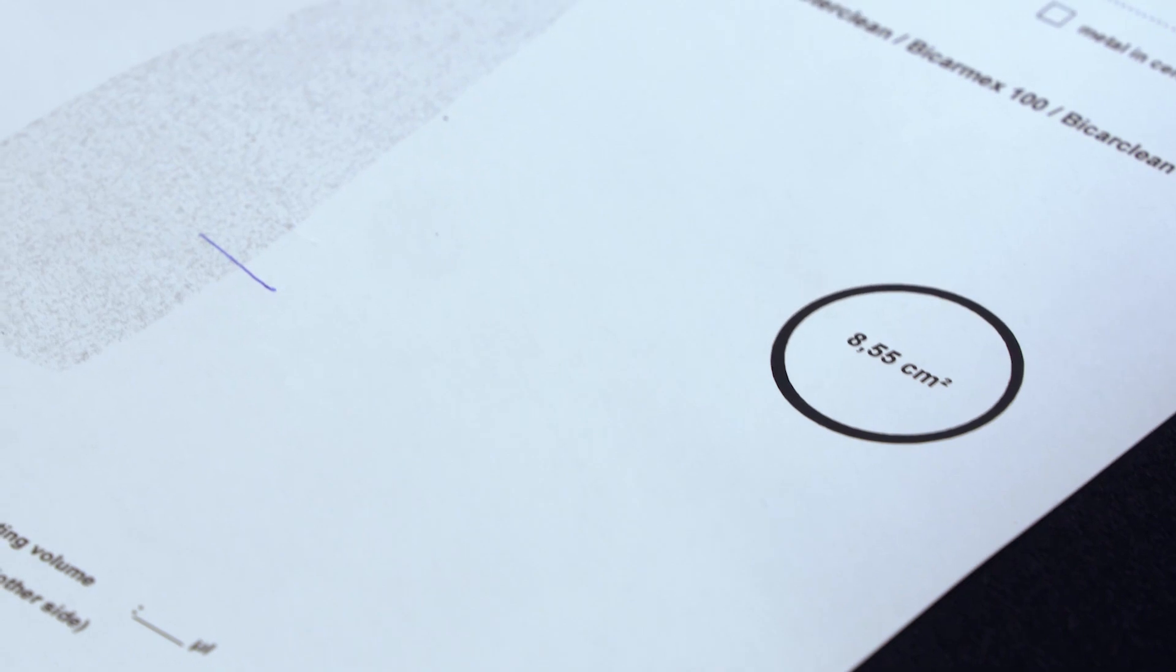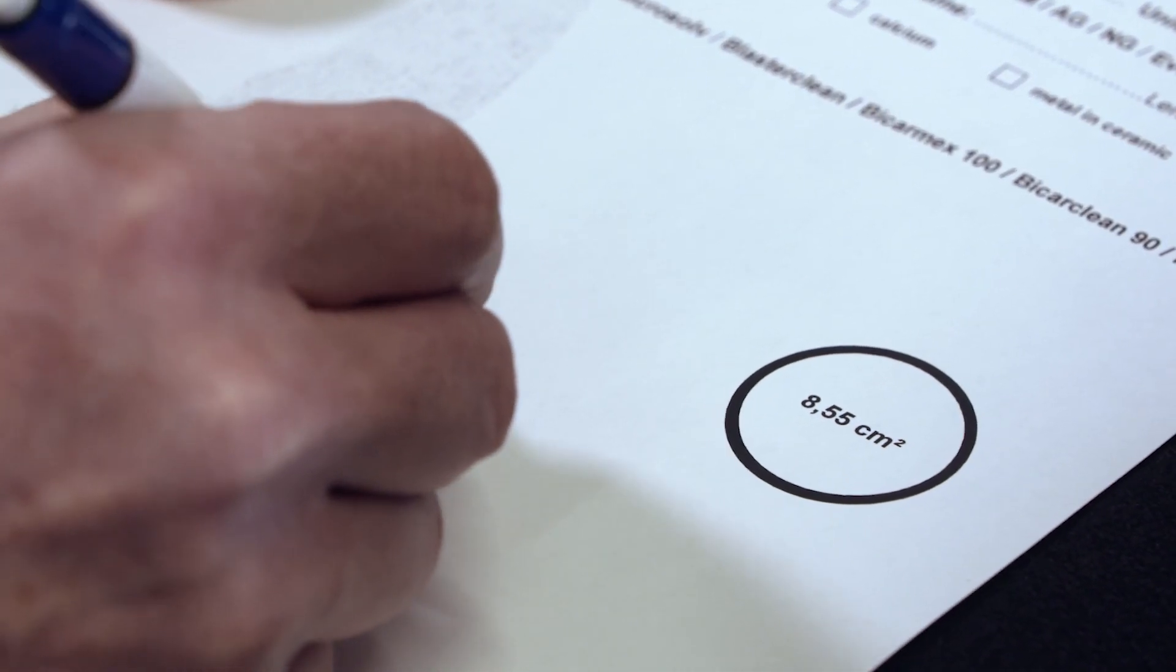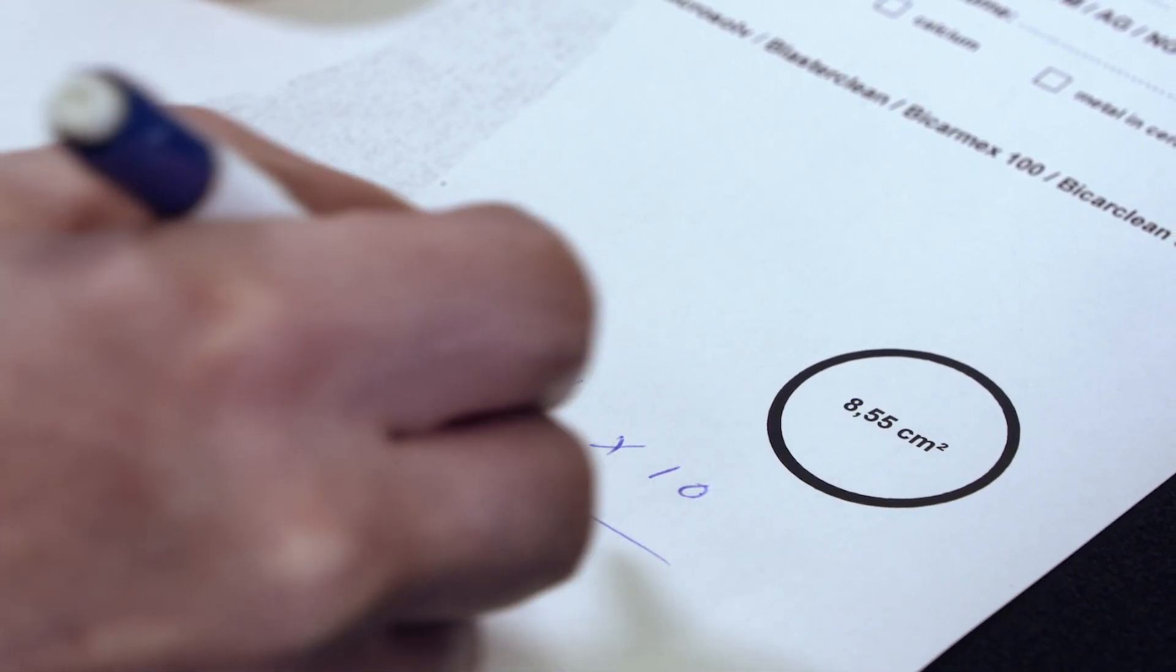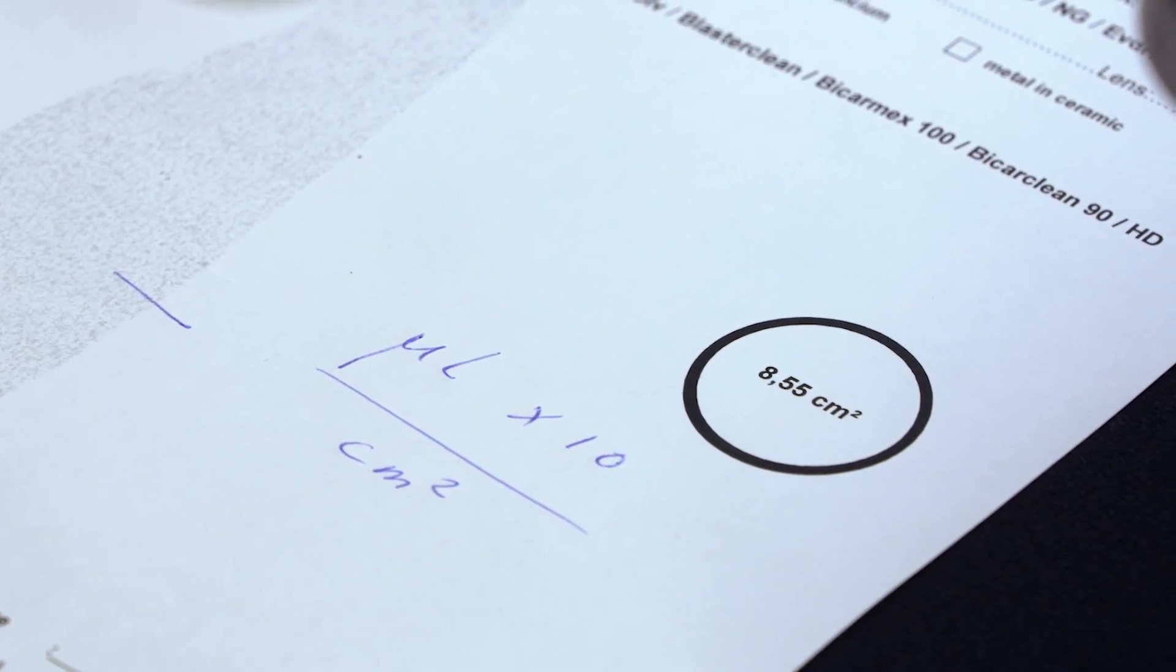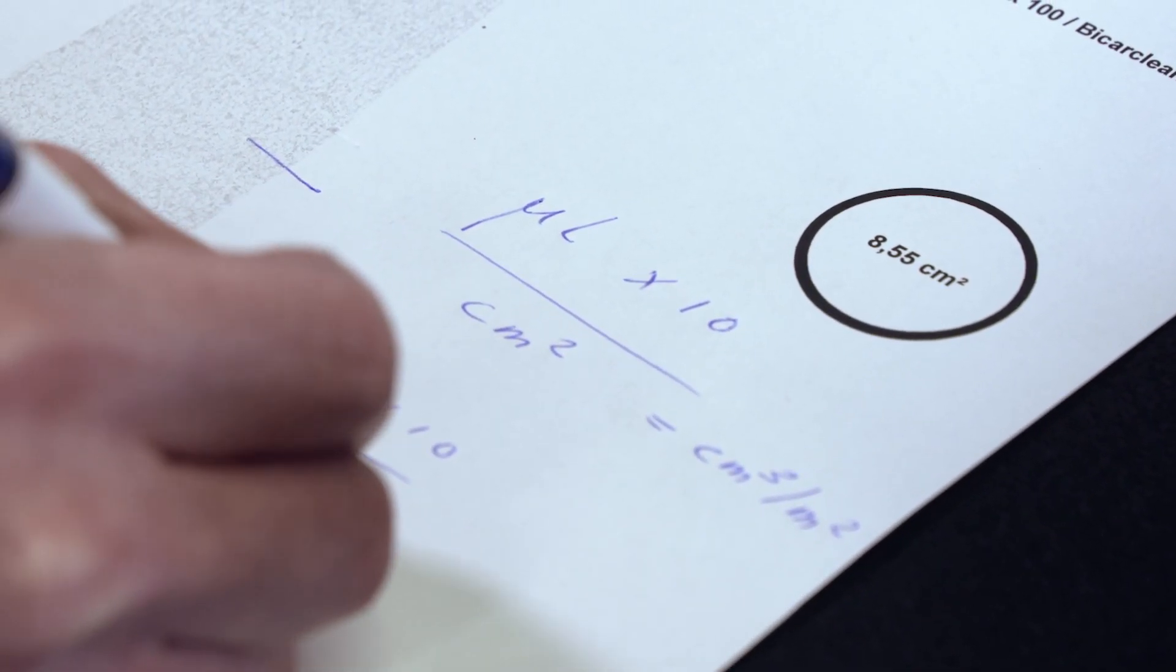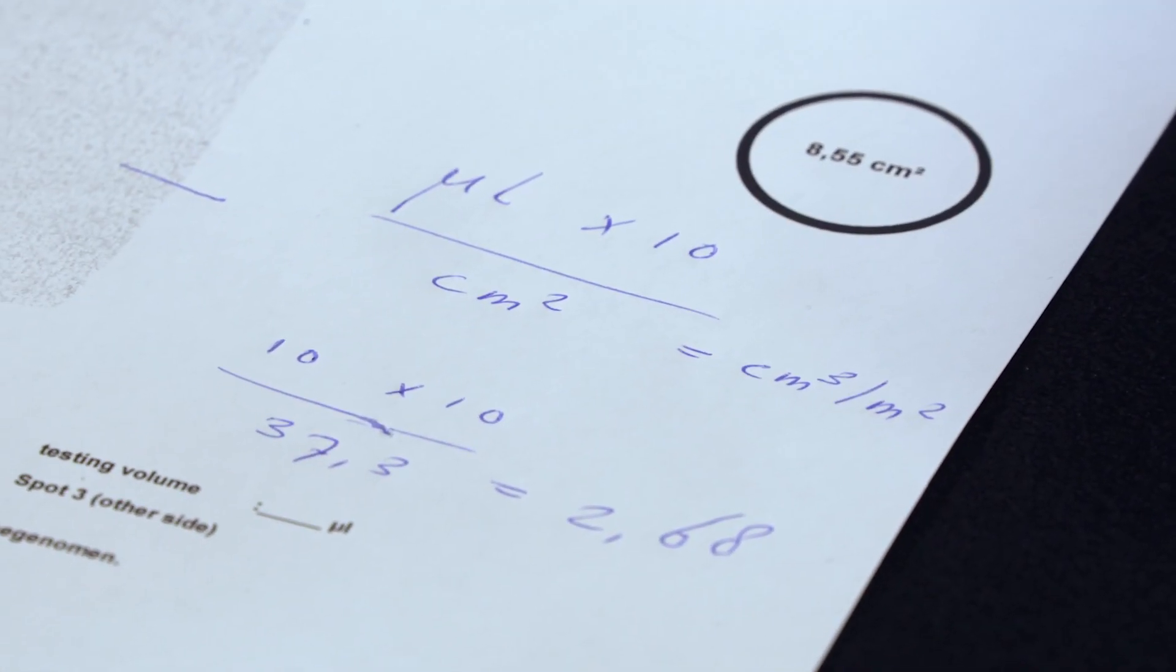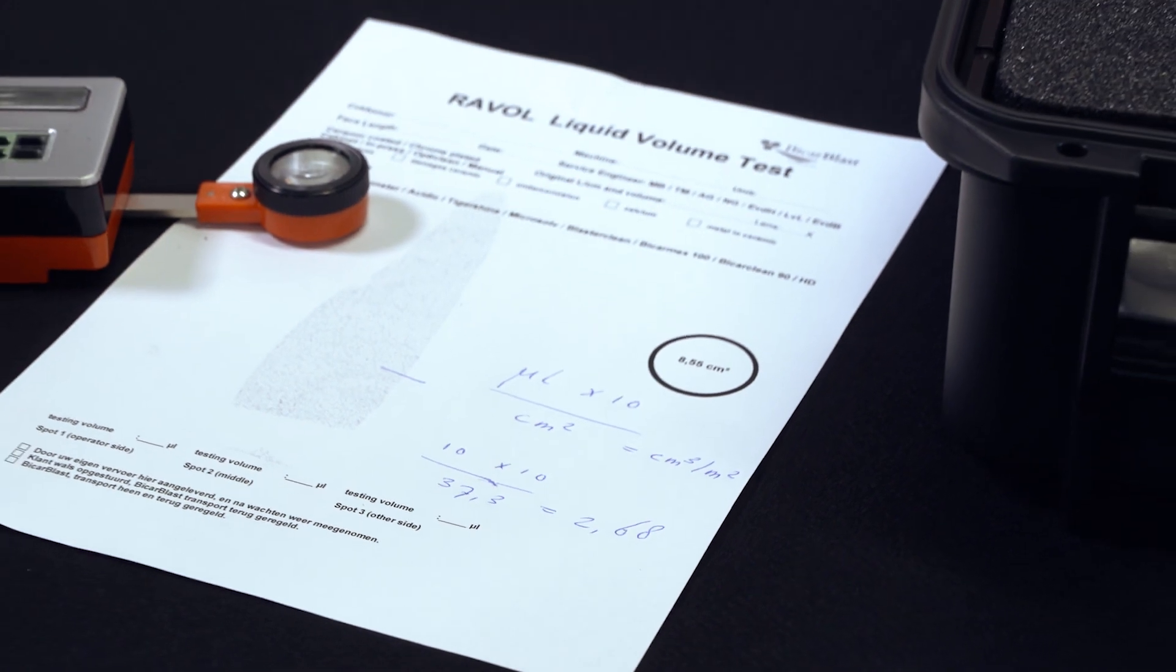Now you must always use the same formula to determine the volume of the anilox roll. The amount of microliters of ink you apply to the roll times 10 divided by the surface of the blot that was measured by the planimeter in square centimeters. In this case, that is 10 times 10 divided by 37.3, which tells us that the volume of this anilox roll is 2.68 cubic centimeters per square meter.